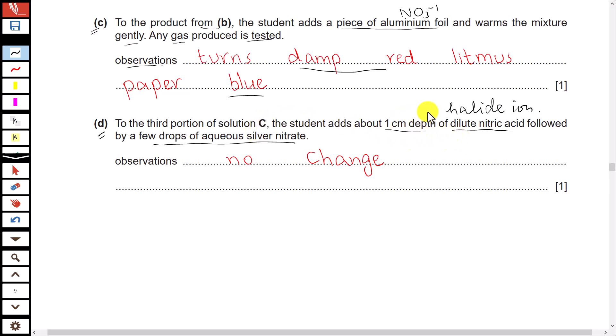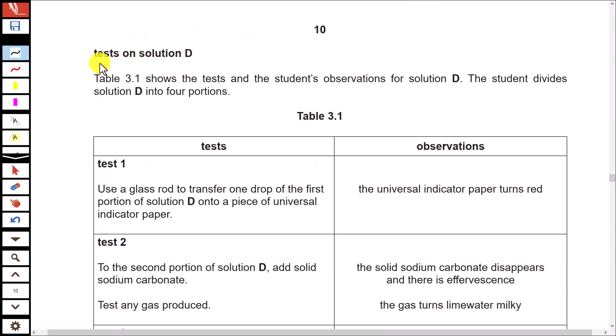So the observation here is no change. Next, there are tests on solution D. The following table shows the tests and the student's observations for solution D. The student divides solution D into four portions.